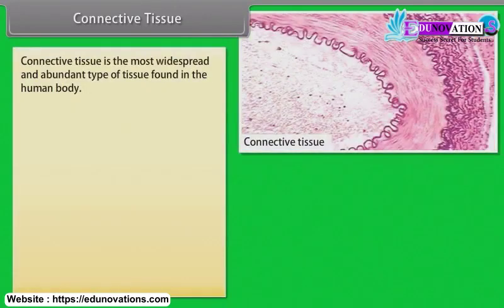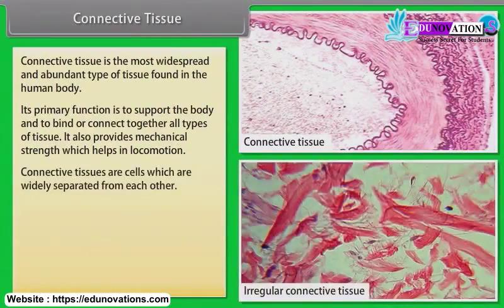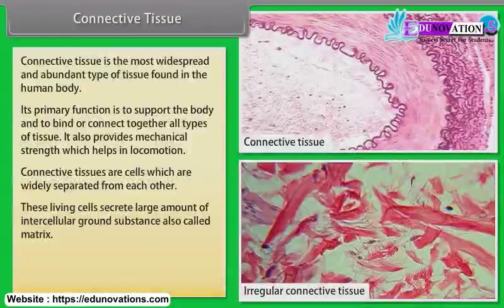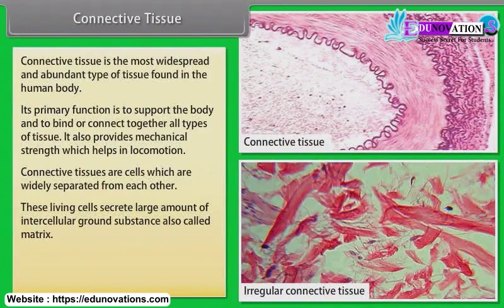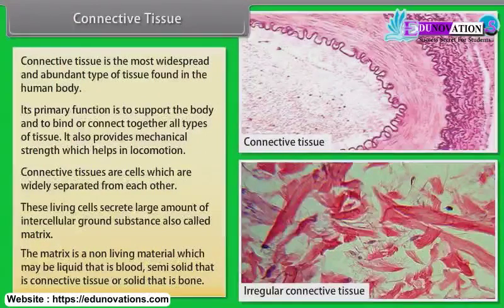Connective tissue is the most widespread and abundant type of tissue found in the human body. Its primary function is to support the body and to bind or connect together all types of tissues. It also provides mechanical strength which helps in locomotion. Connective tissue cells are widely separated from each other and secrete large amounts of intercellular ground substance, also called matrix, which may be liquid (blood), semi-solid (connective tissue), or solid (bone).